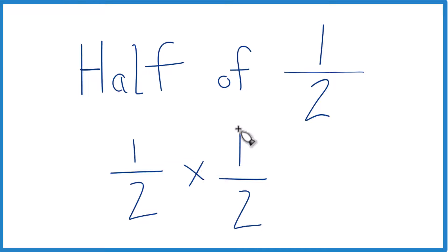With multiplication, you multiply the numerators, one times one equals one, and then the denominators, two times two equals four, and half of one-half is just one-fourth.